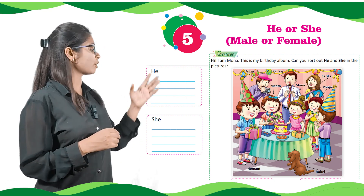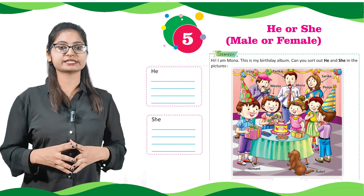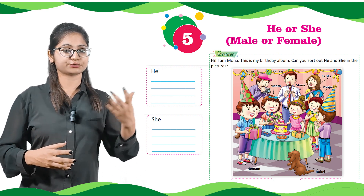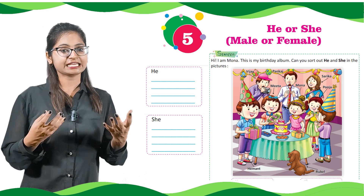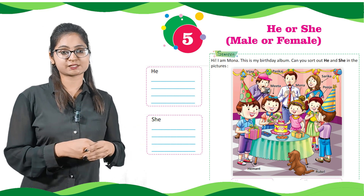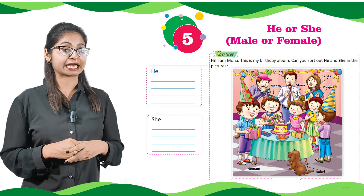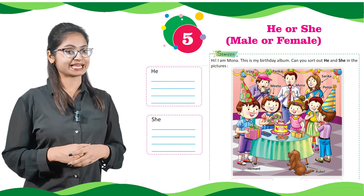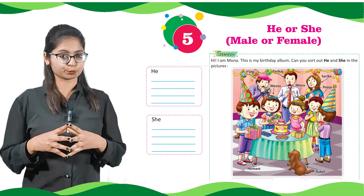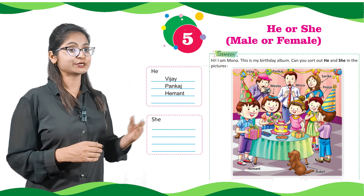We have given a box for he and for she. The person who are male, like our father and brother, is considered as he. In the male group, the names given are Vijay, Pankaj, Heman and Rubil.